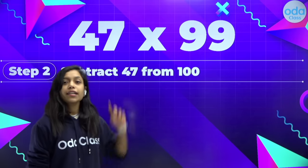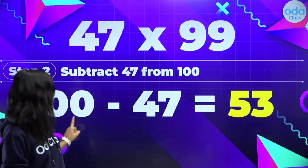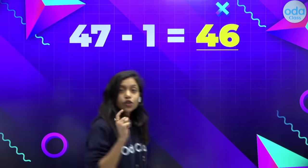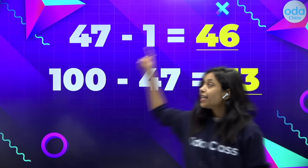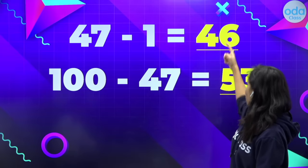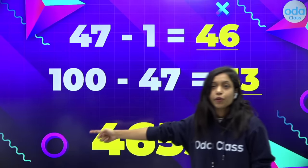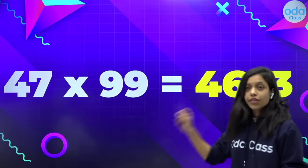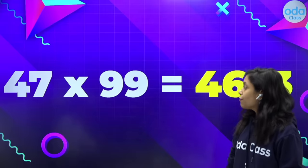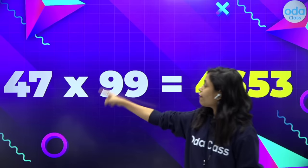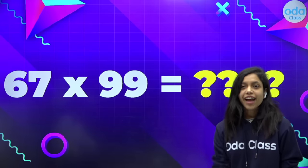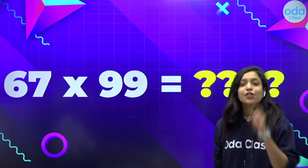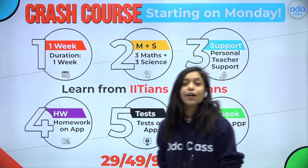The second step is to subtract the number from 100, so that is 100 minus 47, which will be 53. Now we have two numbers, 46 and 53, and we write them together: 4653. That is the answer for 47 into 99. You can try the same for 67 into 99.